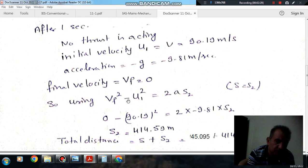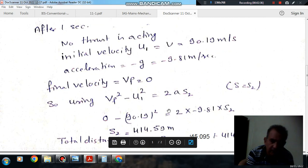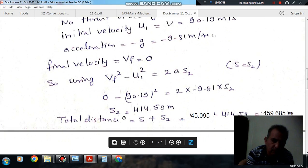Using vf² - ui² = 2as2: 0 - (90.19)² = 2 × (-9.81) × s2. So s2 comes out as 414.5 meters.